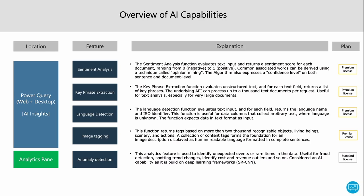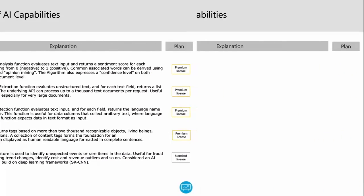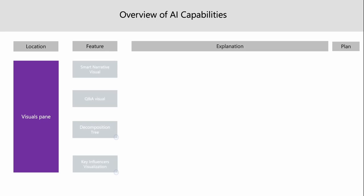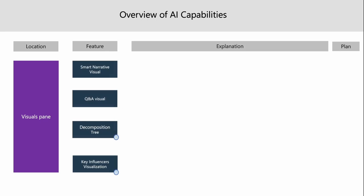We also have AI-powered visuals, which can be found in the visual pane. These include the smart narrative visual, Q&A visual, decomposition tree, and key influencers visualization.